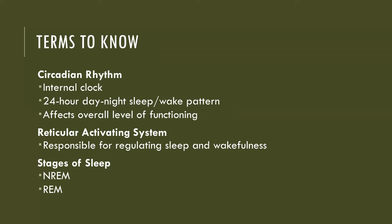The reticular activating system: nerve cell bodies located in the brainstem — the reticular and cortical neurons — are called the reticular activating system, or RAS. Neurotransmitters associated with excitatory and inhibitory sleep mechanisms include catecholamines, acetylcholine, serotonin, histamine, and prostaglandins. Tryptophan and adenosine promote feelings of sleepiness.